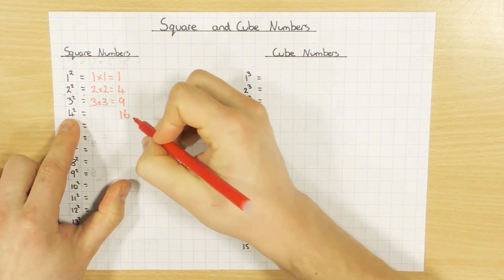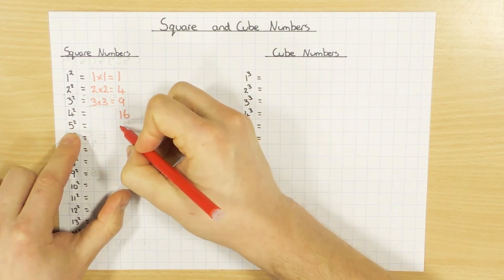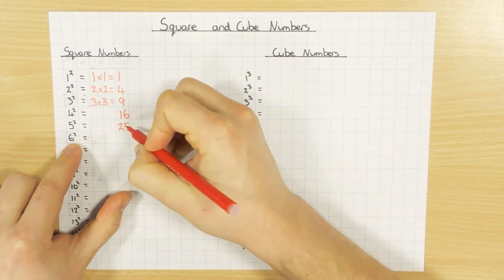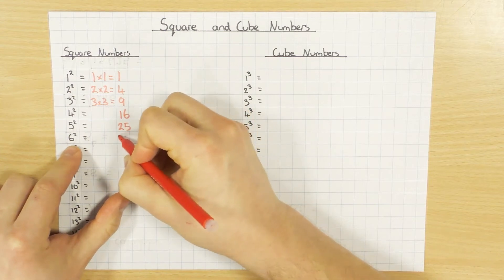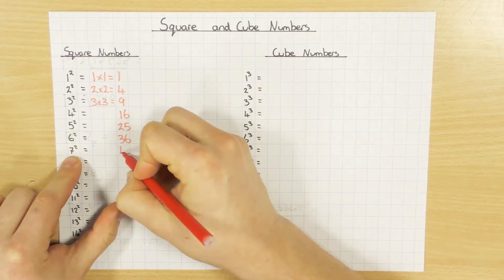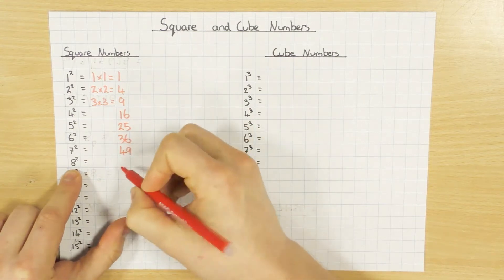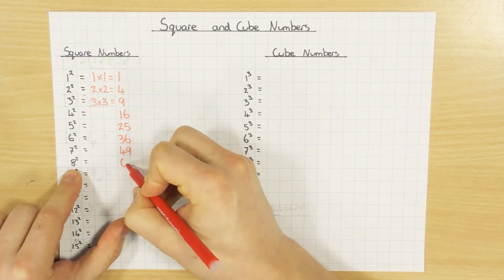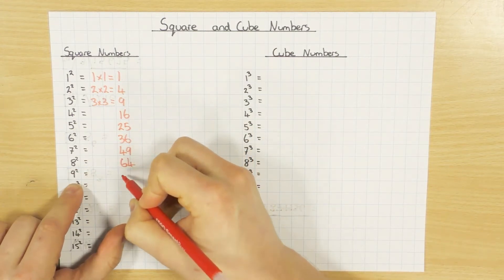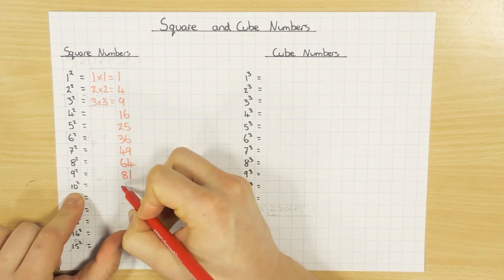4 times 4, 16. 5 times 5, 25. 6 times 6, 36. 7 times 7, 49. 8 times 8, 64. 9 times 9, 81. 10 times 10, 100.